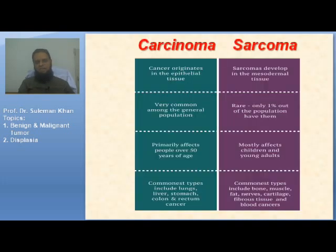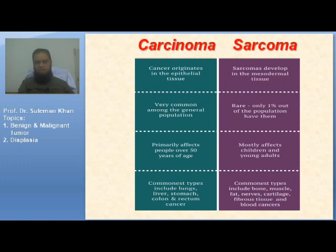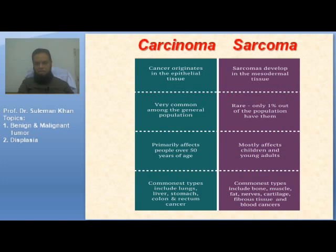The important distinction is between carcinoma and sarcoma. Carcinomas are epithelial tumors arising from epithelial elements, whereas sarcomas are derived from mesenchymal tissues. Carcinomas are common in the general population; sarcomas are rare, occurring in only about 1% of the population. Carcinomas primarily affect people over 50 years of age, whereas sarcomas mostly affect children and young adults. Carcinoma types include lung, liver, stomach, colon, and rectum cancers. Sarcoma types include bone, muscle, fat, nerves, cartilage, fibrous tissue, and blood cancers.